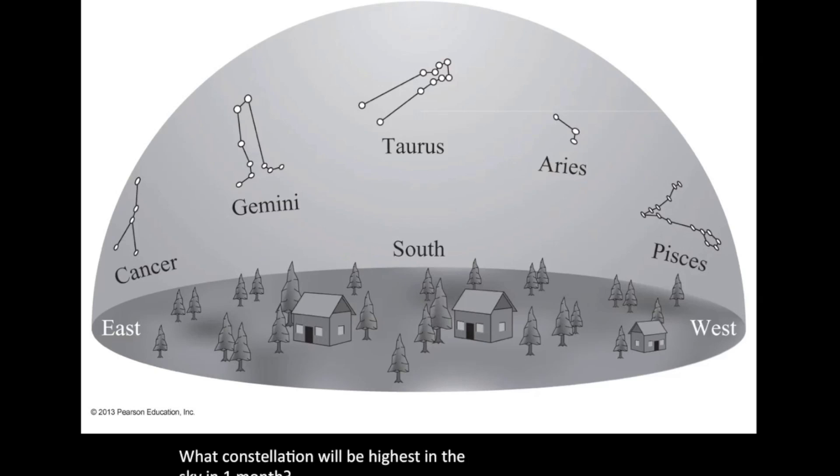Remember, what constellation will be highest in the sky in one month? Right, Gemini. So, let me ask this, if Gemini will be highest in the sky in one month, where will Taurus be? Well, it should just be a little bit to the right or a little bit to the west. So what constellation will be just on the western horizon or just a little bit above it in one month? Right, Aries.